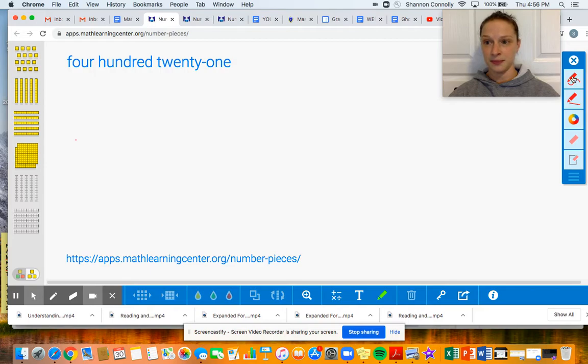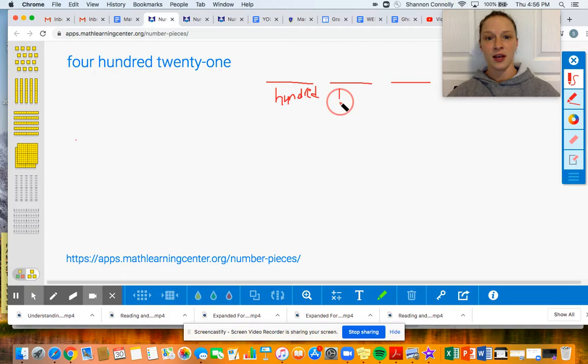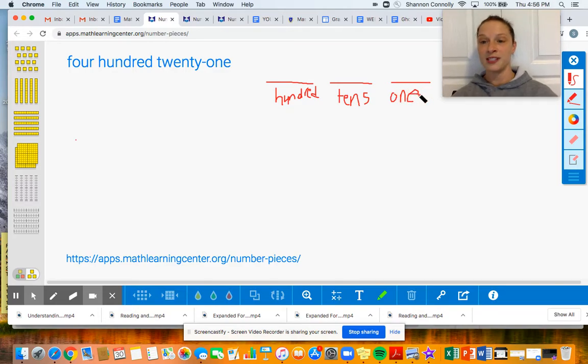Well, there's a lot of place values, but the ones we're tackling today is the hundreds place. And then we also have a tens place and a ones place. Sorry, it's really hard to write in this. So hundreds, tens, ones. And when we're thinking about writing this number, we are going to be thinking about which digit goes in which place value, and we're going to be thinking about what is the value of that digit when we write it.